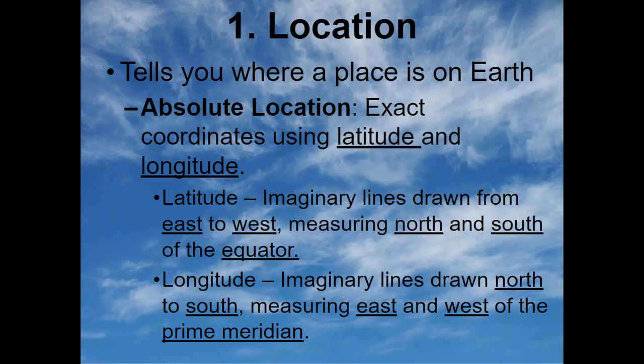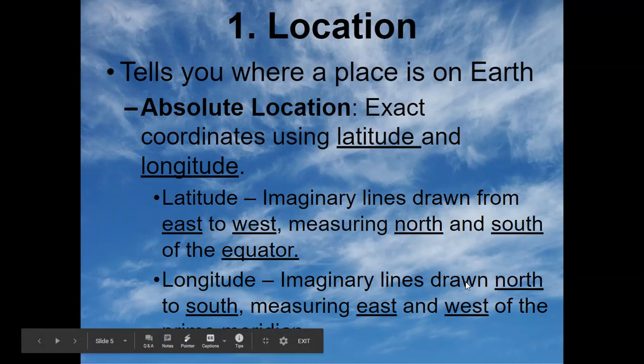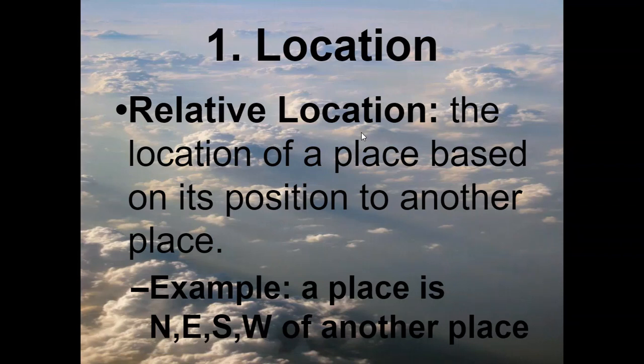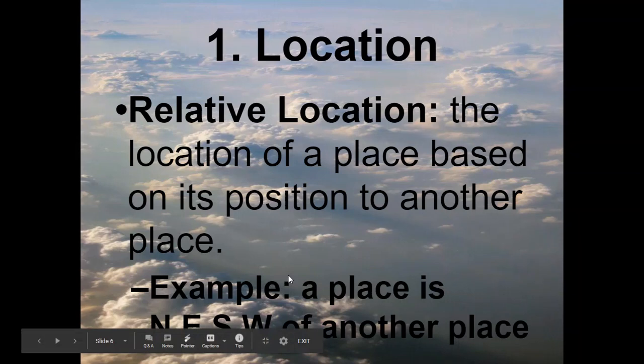Longitude are the imaginary lines on the globe or on a map that are drawn north to south, and they measure east to west. Relative location is the location of places based on the position of other places. For example, if I tell you to go north, or northeast, or west, I'm telling you to head towards a relative location that is relative to where I am at that moment.